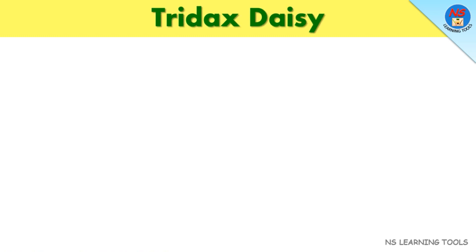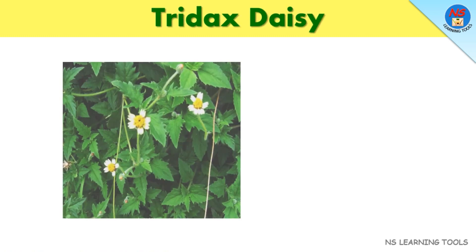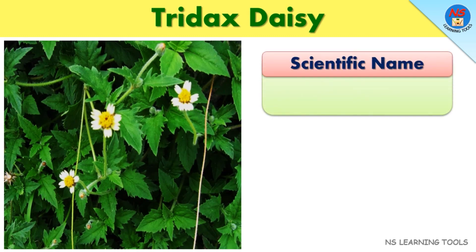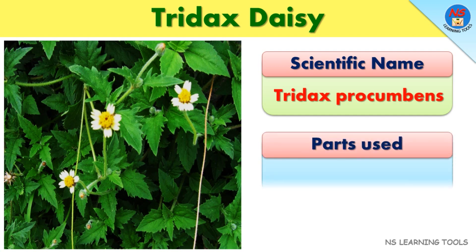Tridax daisy. Scientific name: Tridax procumbens. Parts used: Leaves.